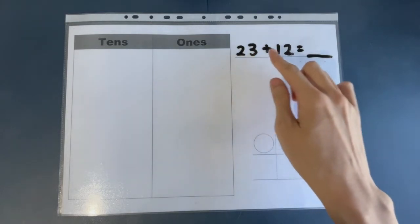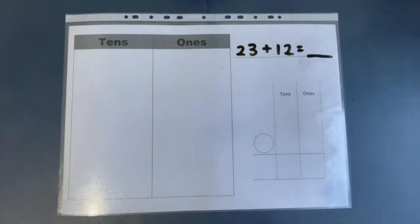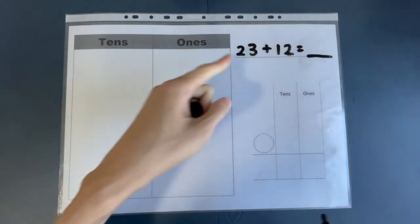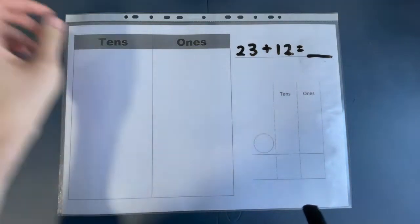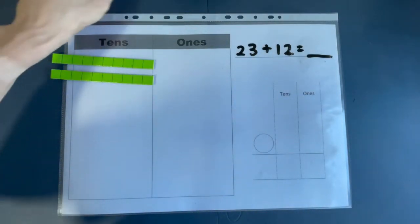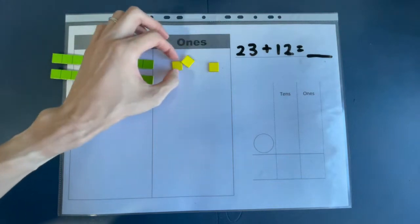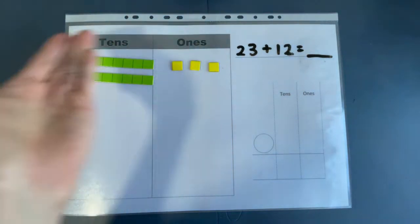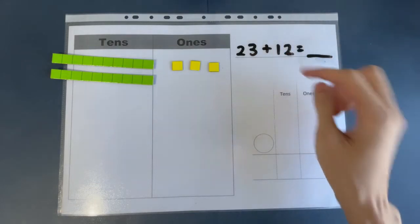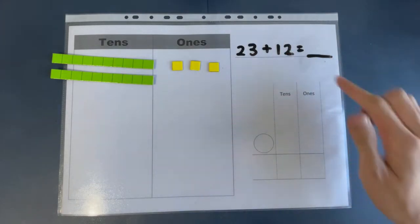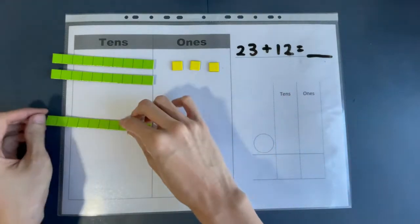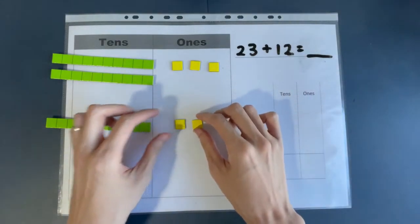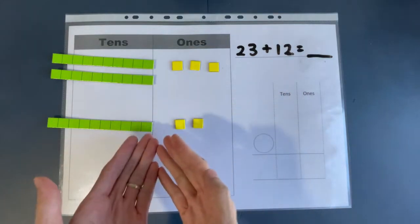All right, first question: 23 plus 12. So let's make 23 and put it over here. 23 is made out of two tens and three ones — two tens and three ones, right here. So this number here is 23. And now we are going to make 12: one ten and two ones. So this number here is 12.